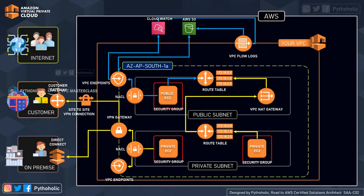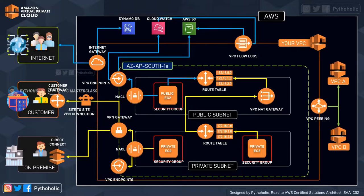Next up, we have the direct connect to the on-premise location with AWS VPN gateways, or what we call virtual private gateways. Then we have the site-to-site VPN connection along with the customer's gateway to connect to our customers so that they have access to our hosted applications. And then we have the VPC endpoints that enable us to create a private connection between the VPC and other AWS services without requiring access over the internet. With VPC flow logs, you can capture information about the IP traffic going to and from the network interfaces in your VPC, and that can be published to CloudWatch and S3. We also have the internet gateway, which allows communication between your VPC and the internet. VPC peering helps establish a network connection between two VPCs that enables you to route traffic between them privately. And last but not least, we have AWS PrivateLink, which provides private connectivity between VPCs, AWS services, and on-premise applications securely on AWS.